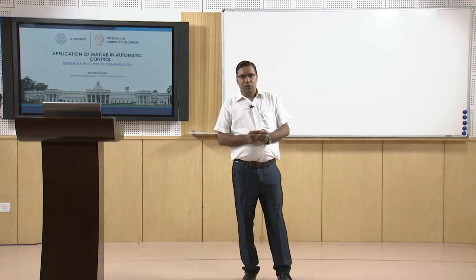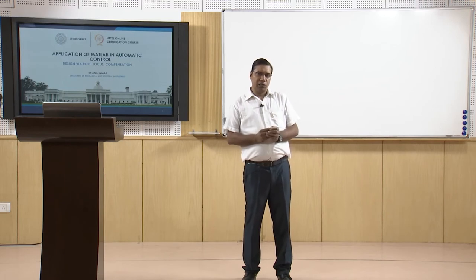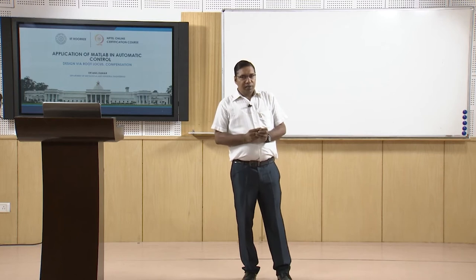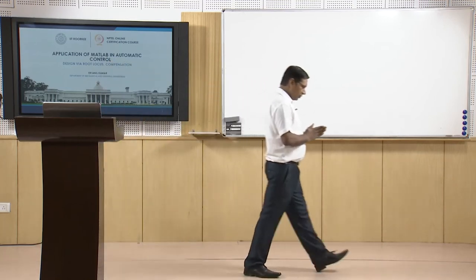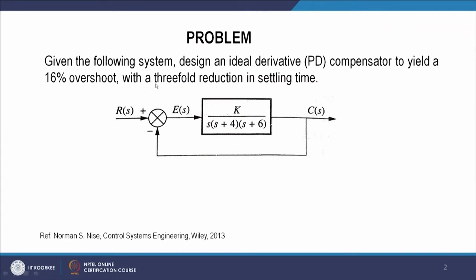When we do PD control, we add a zero in the existing system so that the root locus passes through the desired dominant poles. The problem is: design an ideal derivative compensator to yield 16 percent overshoot with a threefold reduction in settling time. The plant is G(s) = K / [s(s+4)(s+6)] and H(s) = 1, unity feedback.